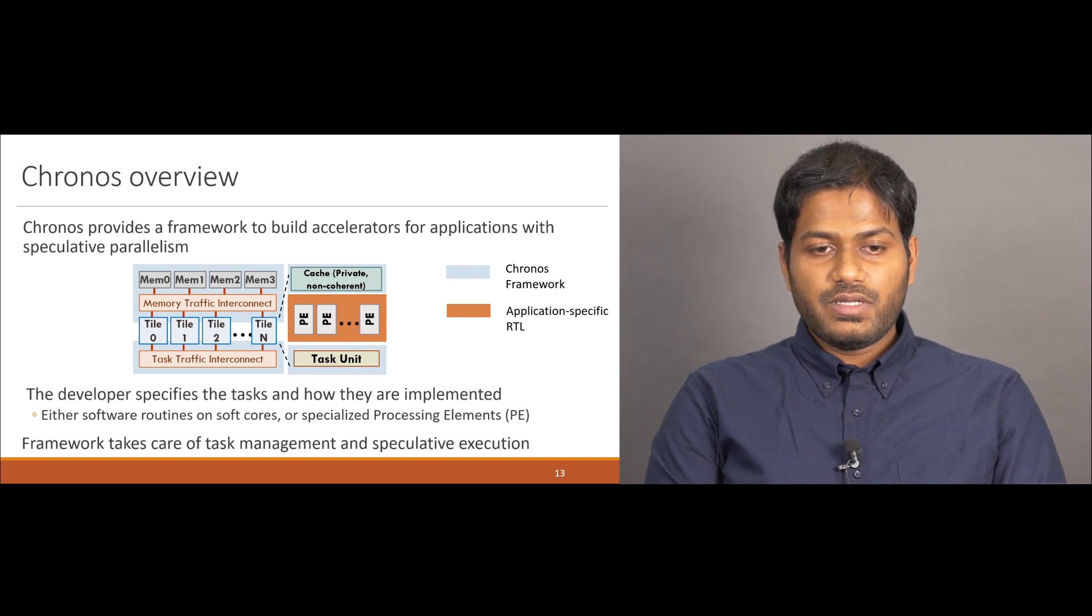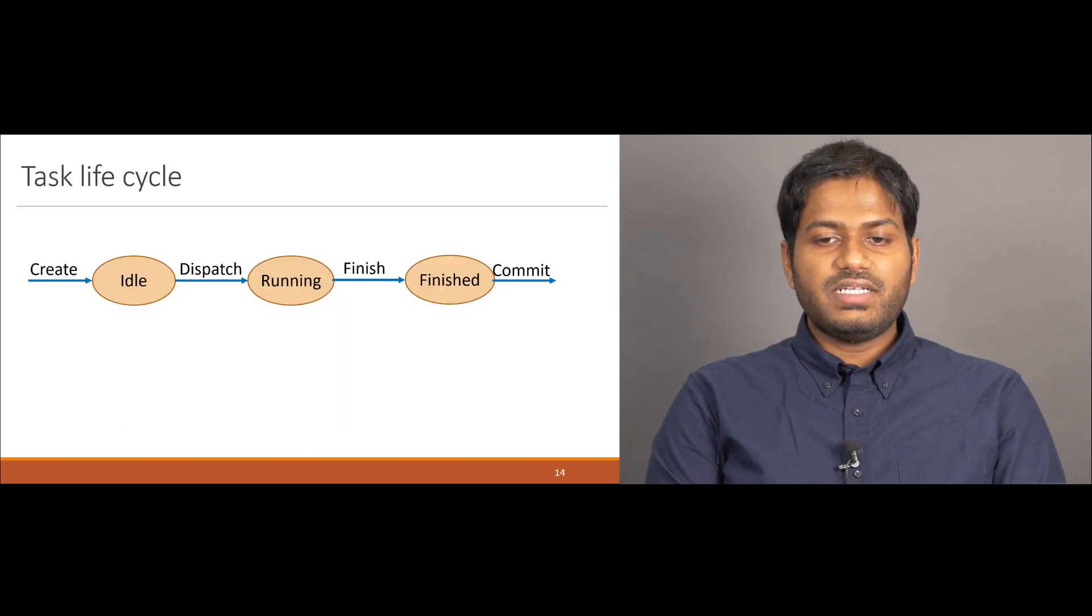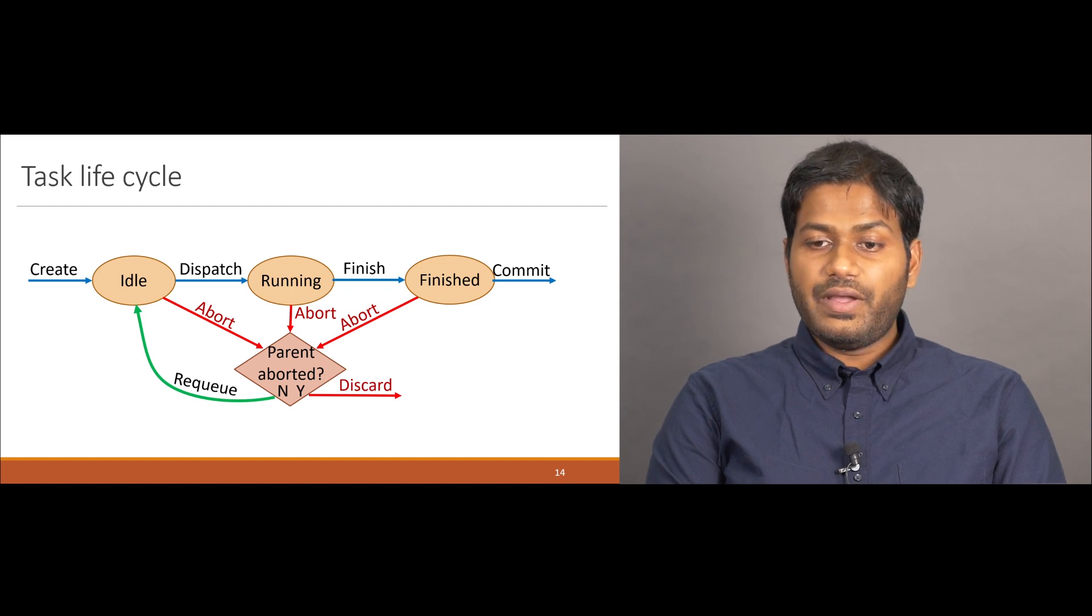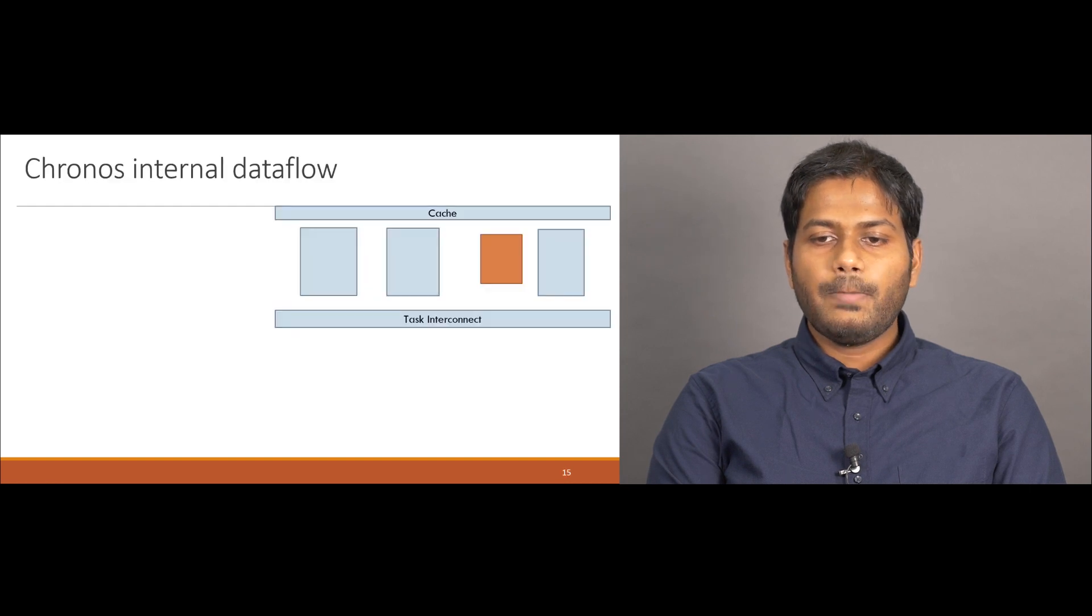To understand how Kronos performs this speculative execution, we begin by understanding the life cycle of a task. A Kronos task is created in the ideal state when a PE enqueues a new task through the SLOT.enqueue interface. An ideal task is dispatched to run on a PE in timestamp order, and once it is finished, it stays in the finished state until it can commit. A task in any of these states can also be aborted. After the abort, the task can either be discarded or requeued. The decision to discard or requeue depends on why the task aborted in the first place. If the task was aborted because its parent has also aborted, then the task must be discarded. Otherwise, if the task aborted due to a conflict, then it is requeued back into the ideal state.